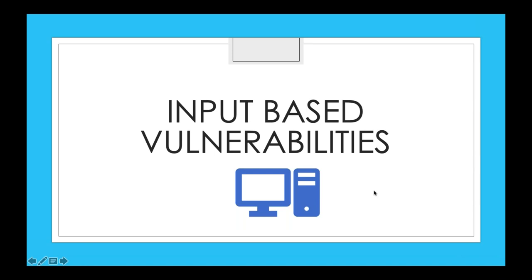Moving on to input-based vulnerabilities. Whenever I do a code review or pen testing, I always look for input-based vulnerabilities. There are multiple types. Starting with injection, which is A1 in OWASP — injection can be SQL injection, command injection, OS command injection, or LDAP injection. Anything you're trying to inject at the backend.